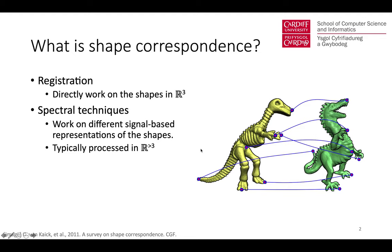There are two types of methods. One is the method based on registration in the spatial domain, which directly works on the shapes in R3. The other type is spectral techniques, which work on different signal-based representations of the shapes, typically processed in high-dimensional space.